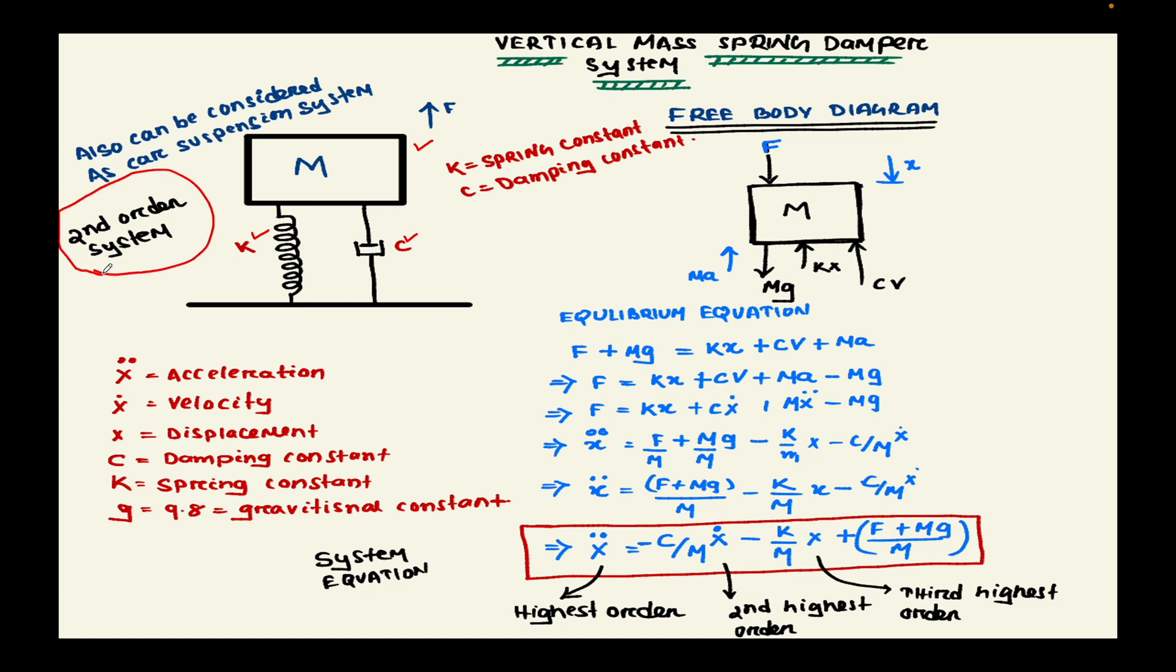Coming to the equilibrium equation, if we apply force to the downward direction, a mass into acceleration component will be created in the opposite direction. Along with that we have the gravitational force acting in the downward direction where m is the mass and g is the gravitational constant. kx and cv will oppose the applied force because these are generated from the components, which are the spring and the damper.